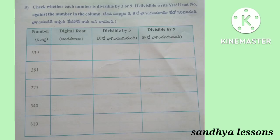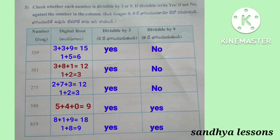Third Roman: Check whether each number is divisible by 3 or 9. Digital root of 339 is 6 — divisible by 3, not by 9. Digital root of 381 is 3 — divisible by 3, not by 9. Digital root of 273 is 3 — divisible by 3, not by 9. Digital root of 540 is 9 — divisible by both 3 and 9. Digital root of 819 is 9 — divisible by both 3 and 9.